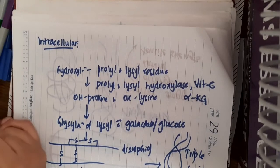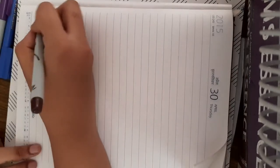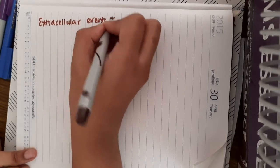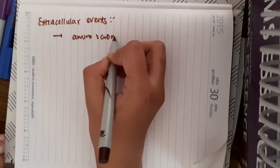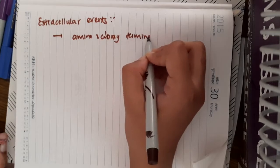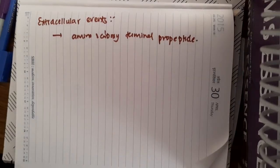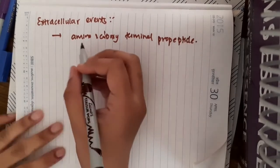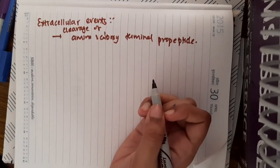But still, this triple helix does not have such tensile strength. It is not so strong. So for it to become strong, we have extracellular events. In the extracellular events, first there is cleavage of amino and carboxy terminal propeptides. Here, the first event is cleavage of amino and carboxy terminal propeptides.